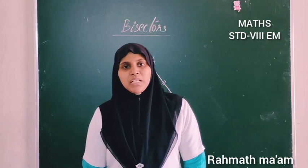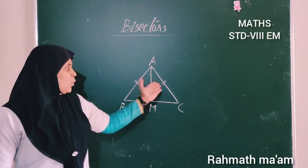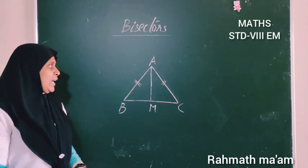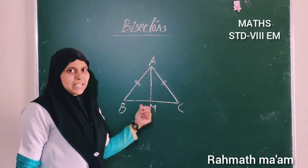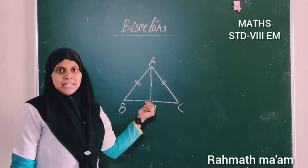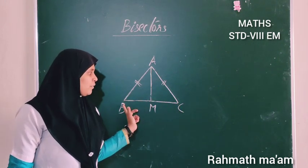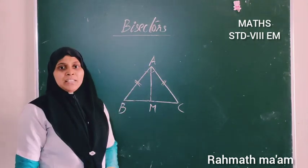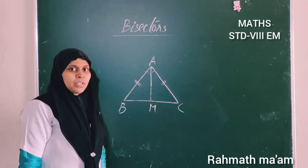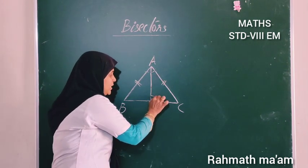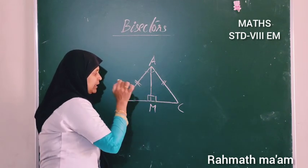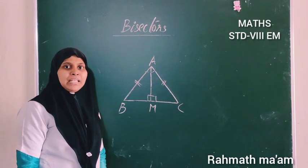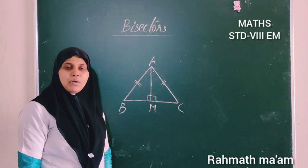Now look at the board. In this figure, AB equals AC, so we know that this triangle is an isosceles triangle. This line AM is the bisector of BC. AM bisects the angle A as well, and the angle between these two lines is 90 degrees. So we can say that AM is the perpendicular bisector of the line BC.